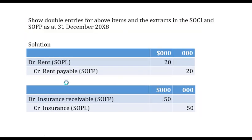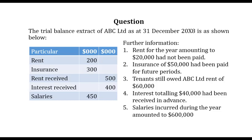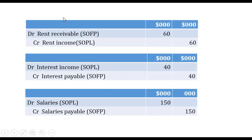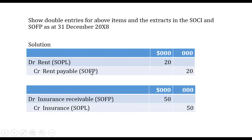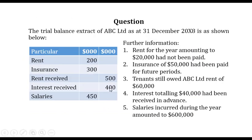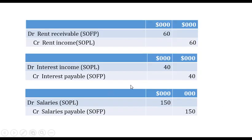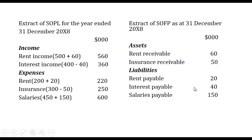For rent received: the trial balance shows five hundred thousand. We add the accrued income of sixty thousand, giving rent income of five hundred and sixty thousand in the income statement. Rent receivable of sixty thousand is an asset in the statement of financial position. For interest received: we received four hundred thousand but forty thousand was received in advance, so interest income is three hundred and sixty thousand. The remaining forty thousand becomes a liability.